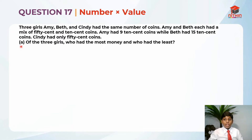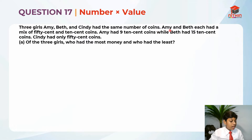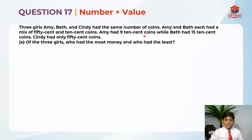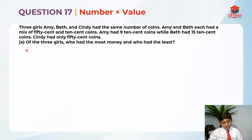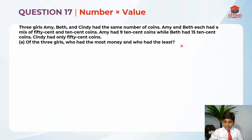So let's read the question first. Three girls, Amy, Beth and Cindy had the same number of coins. Amy and Beth each had a mix of 50 cent and 10 cent coins. Amy had 9 ten-cent coins while Beth had 15 ten-cent coins. Cindy had only 50 cent coins. Part A: of the three girls, who had the most money and who had the least?